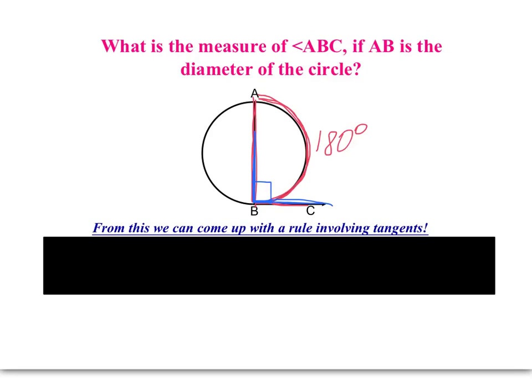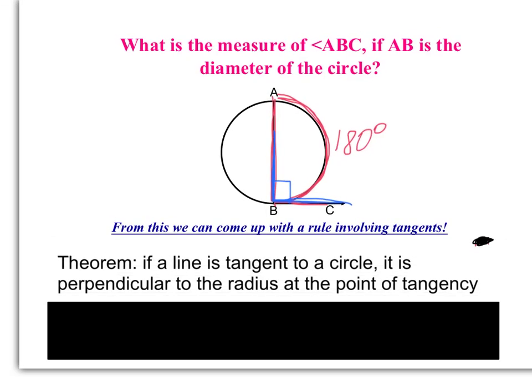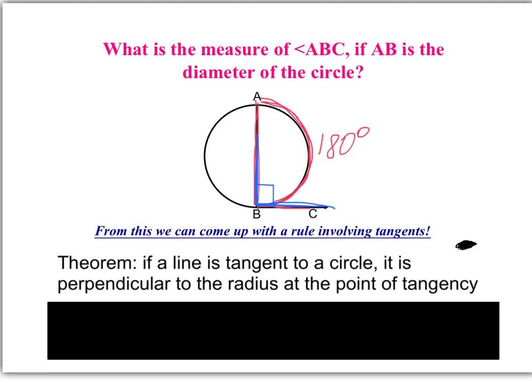So what does this mean for us? It means if a line is tangent to a circle, then it's perpendicular to the radius at the point of tangency. Basically, if you have a tangent on a circle, it's going to be perpendicular to that tangent line. That's always going to happen. Okay, so you want to write that down — get that in your notes, that's an important one.